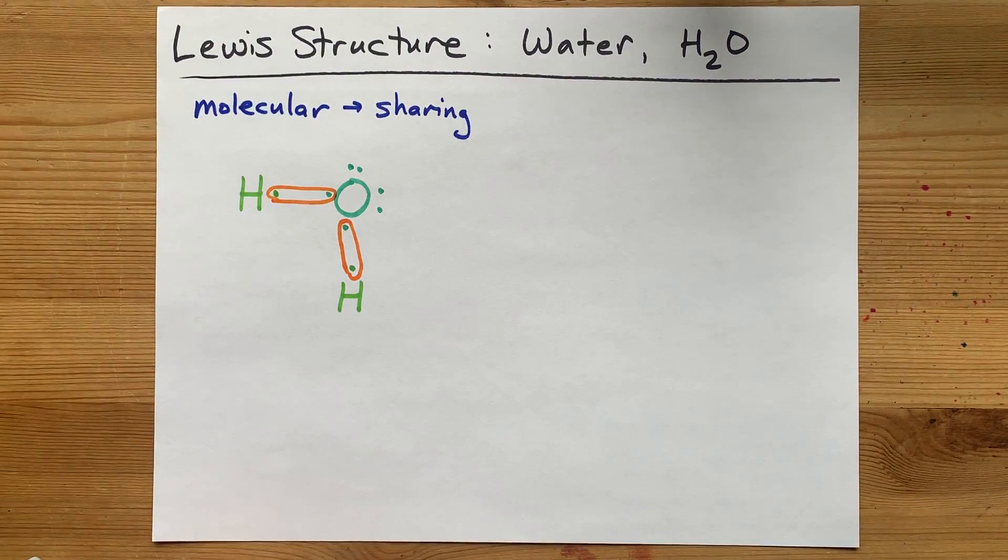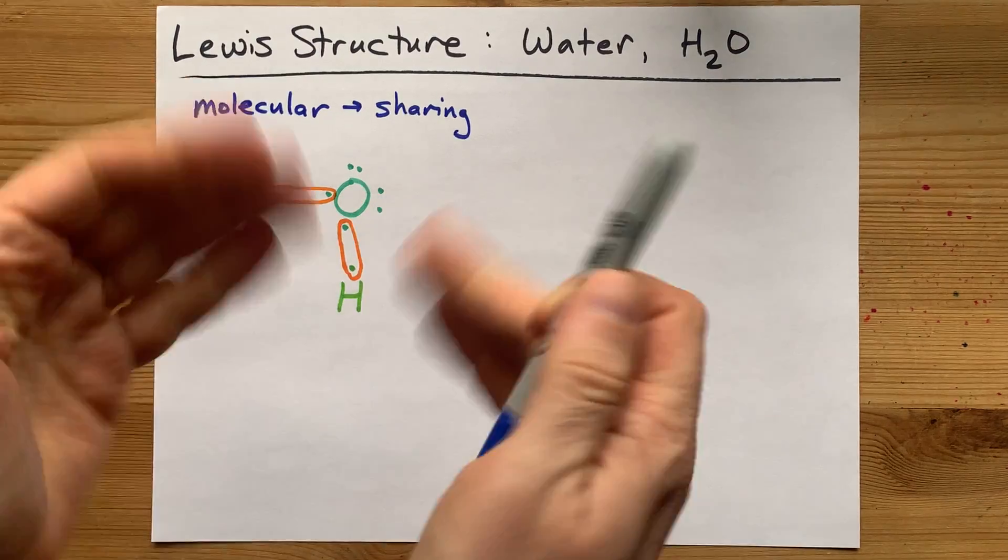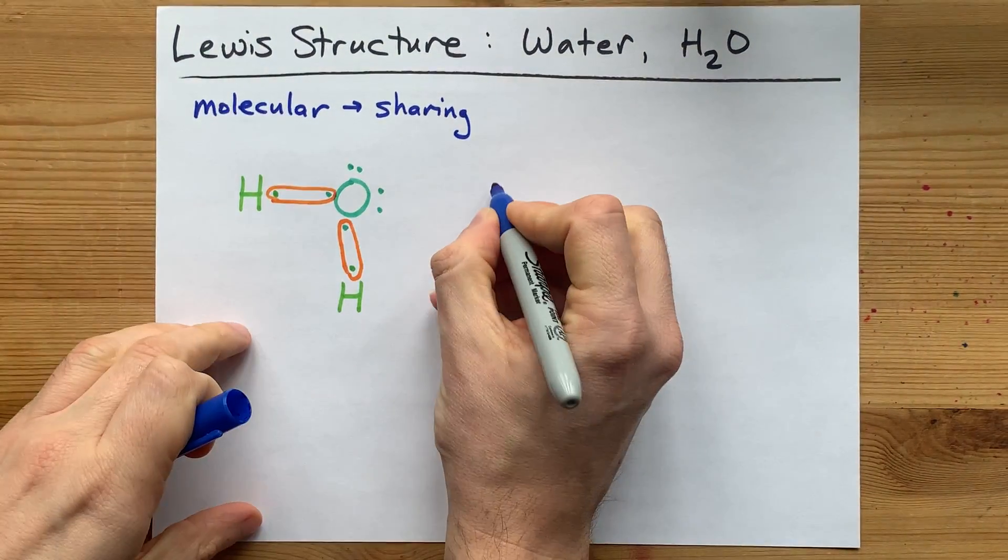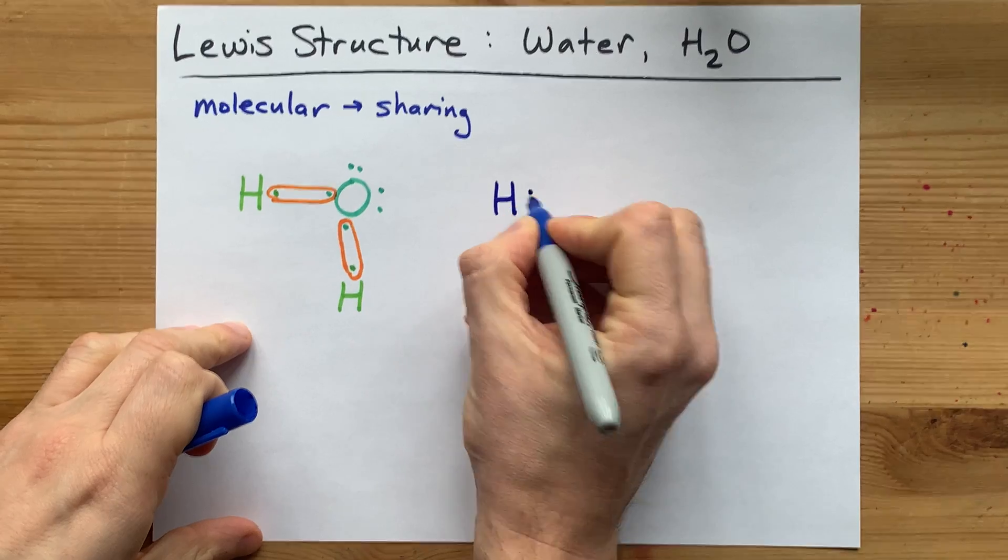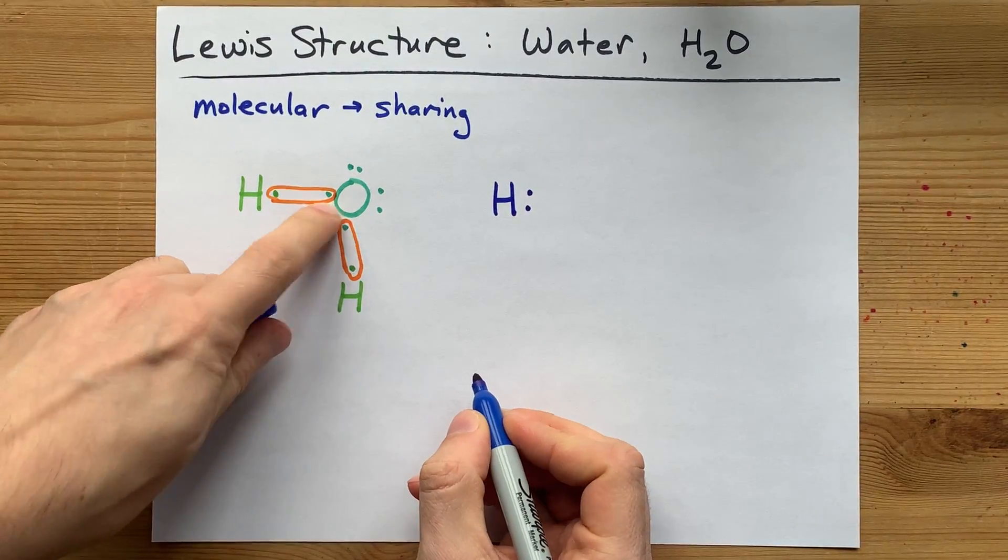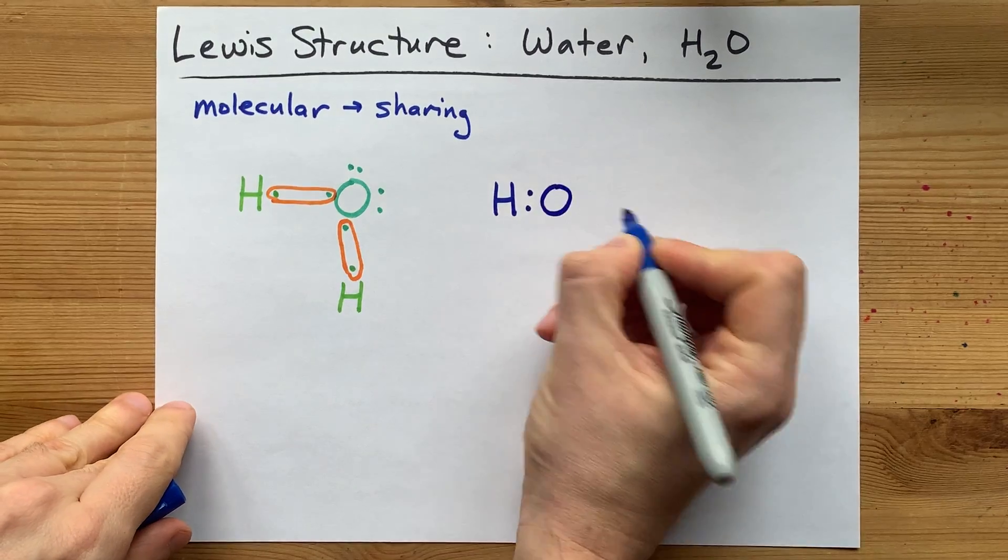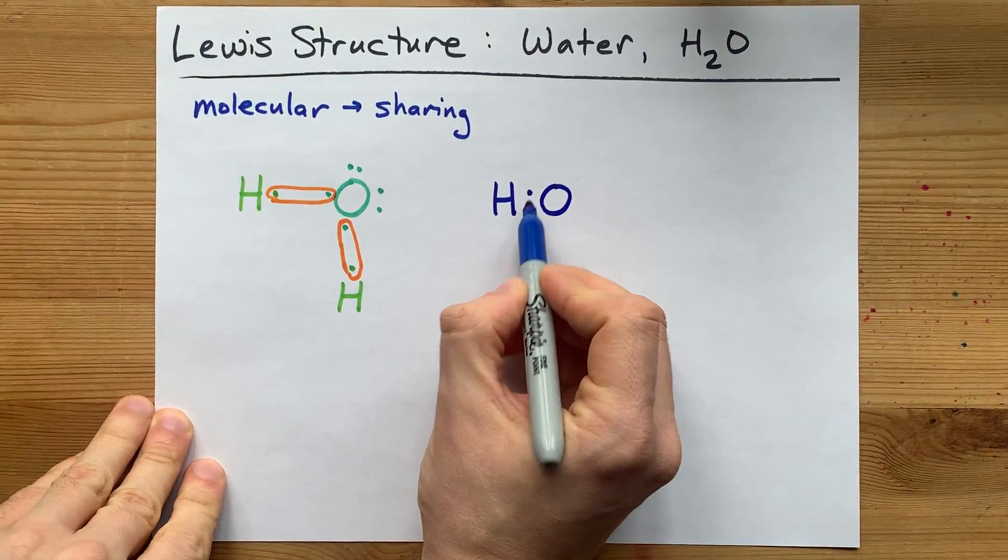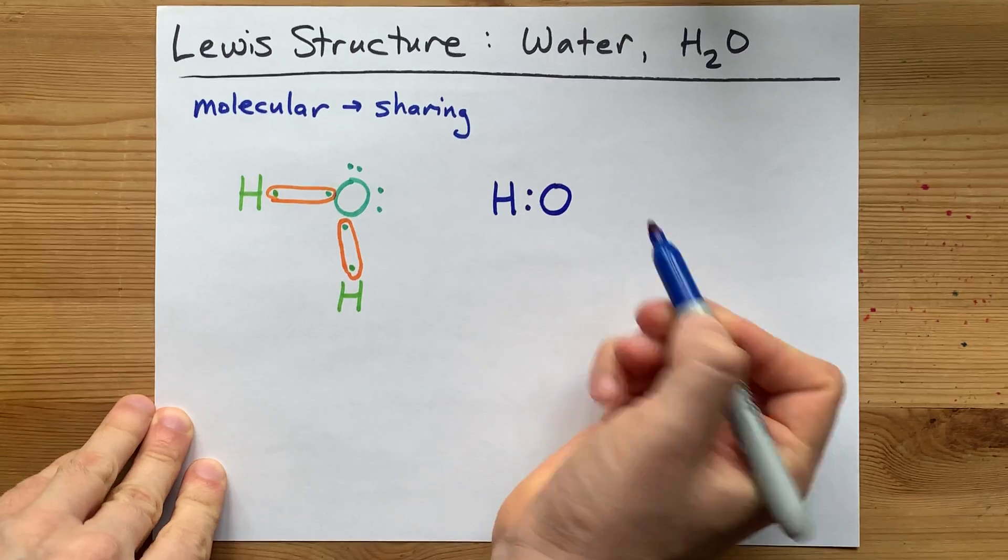Let me draw that for you with each of these pairs actually shared. You've got a hydrogen, and one of these electrons came from hydrogen. One of these electrons came from oxygen. Oh. See how those two electrons are actually shared between the two?